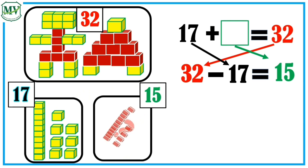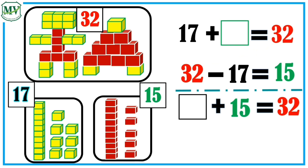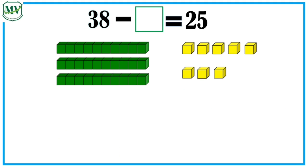So, there are 15 red cubes. How about if the total number of red cubes is the unknown? What should we do? The number sentence is blank plus 15 equals 32. So, subtract 15 from 32. 32 minus 15 equals 17. Let's have another example.